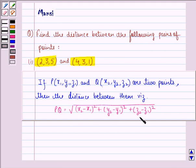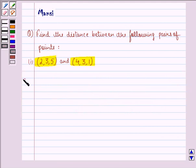So, using this formula, we find out the distance between the points (2, 3, 5) and (4, 3, 1). So, let us start with the solution to this question. Let the point P be (2, 3, 5) and the point Q be (4, 3, 1).